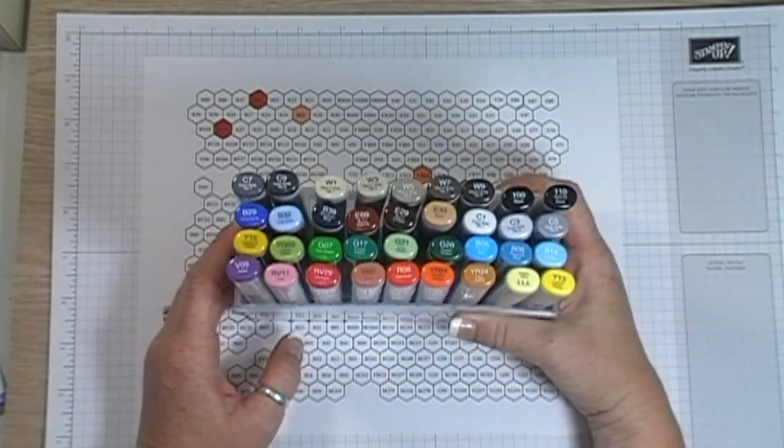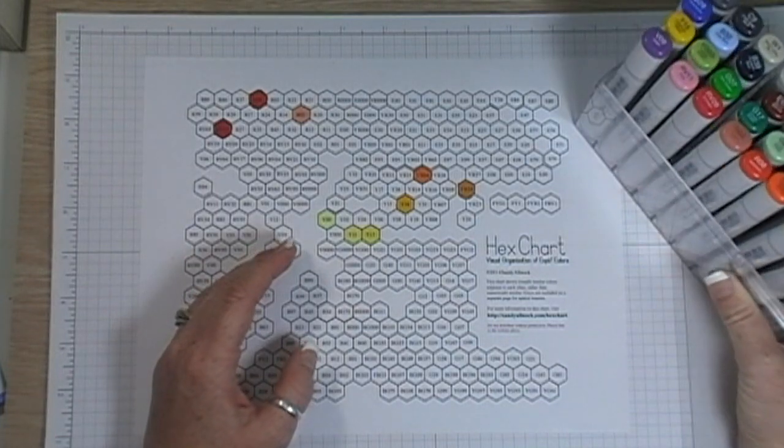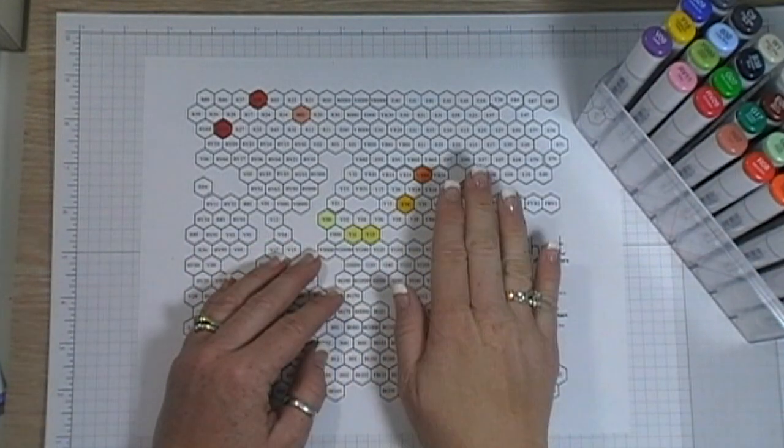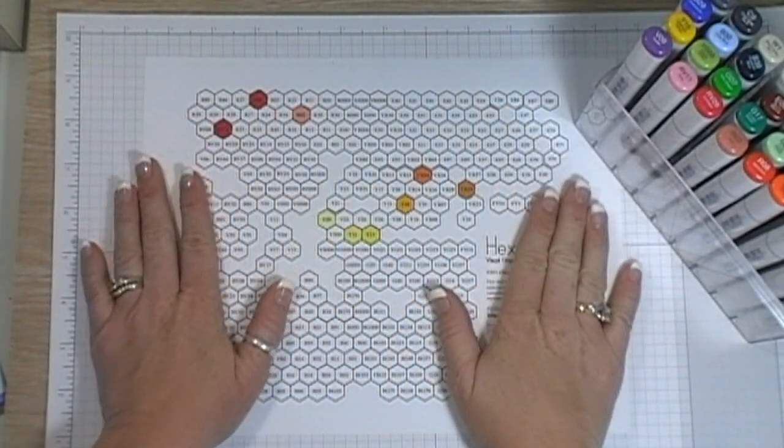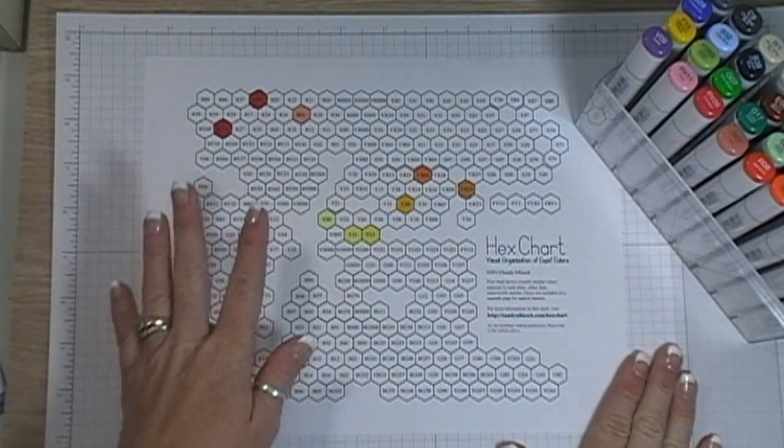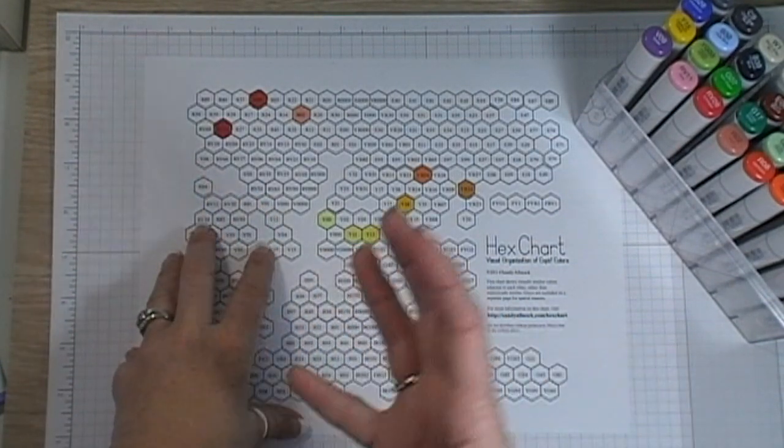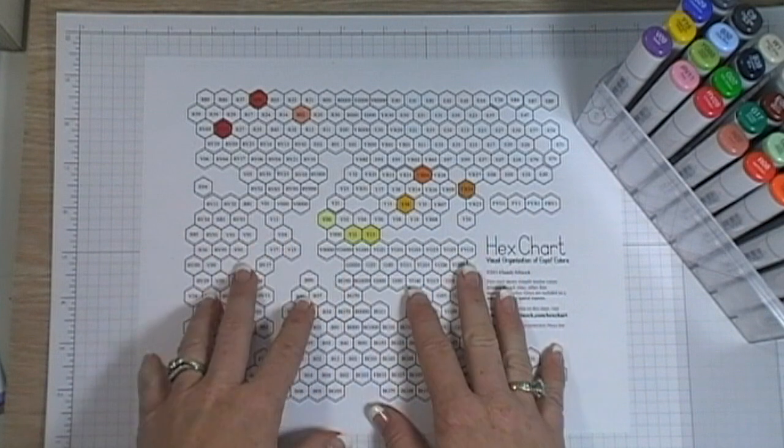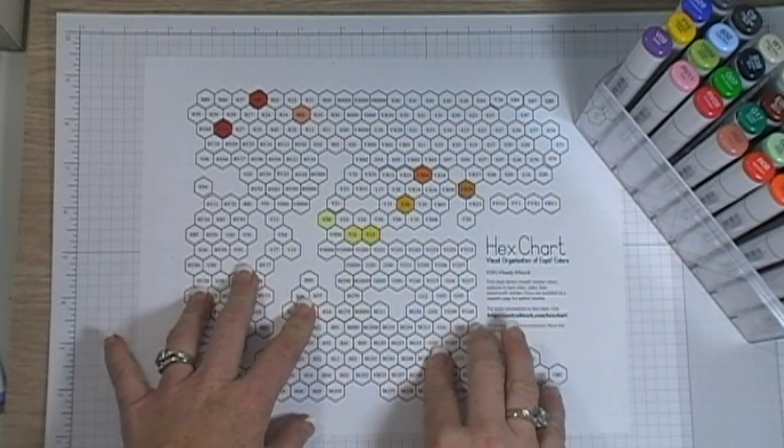And then I found Sandy Alnock who is amazing. I actually found her through Christina Werner and she does this cool hex chart where you get one blank and one completely filled in so you know which ones you own already.